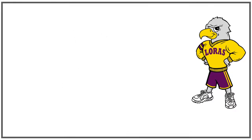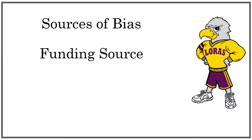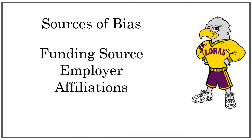When we ask about hidden agendas, we want to know about the biases of the author. We can look for where the funding for the research came from, who the author is employed by, and what organizations they are affiliated with. These influences can have both subtle and overt effects on a source. Bias does not necessarily mean you can't use a source, but you should look for sources that have a variety of biases to make sure you get a complete picture of your topic.